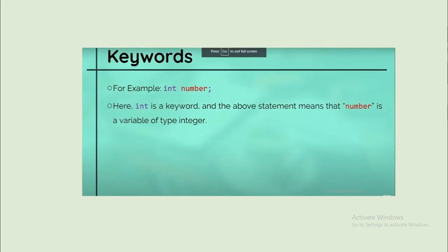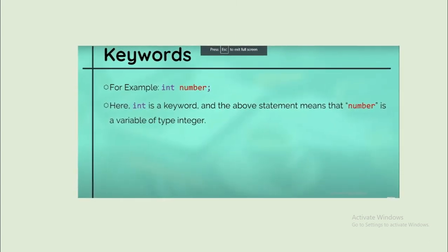I can explain with the example int space number. Int is a keyword because it represents integer data. Number is a variable of type integer. You can observe this slide to understand about keywords.